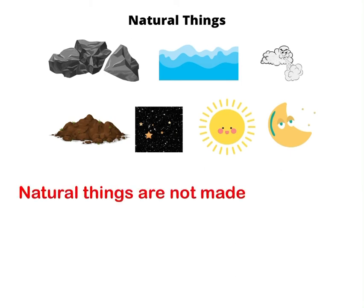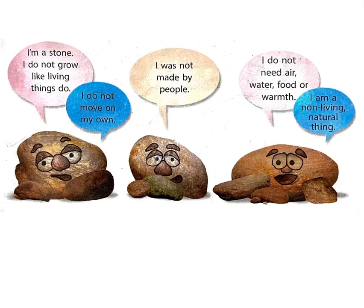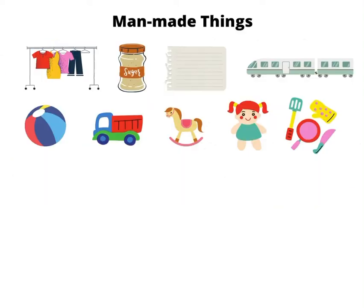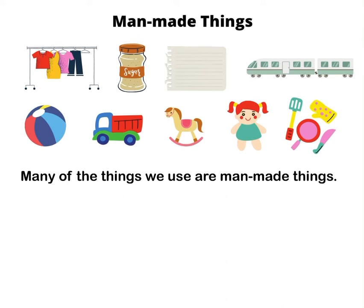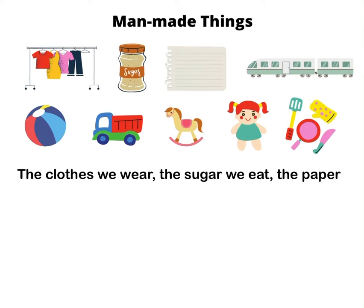Natural things are not made by people. 'I am a stone. I do not grow like living things do. I do not move on my own. I was not made by people. I do not need air, water, food, or warmth. I am a non-living natural thing.'